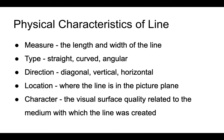The measure of a line is the length and width of the line. The type of line can be straight, curved, or angular, for example. The direction of the line can be diagonal, vertical, horizontal, and everything in between. The location is where the line is located within the picture plane itself. And the character is the visual surface quality related to the medium with which the line was created — so a line made by a crayon is very different from a line made by a Sharpie marker.